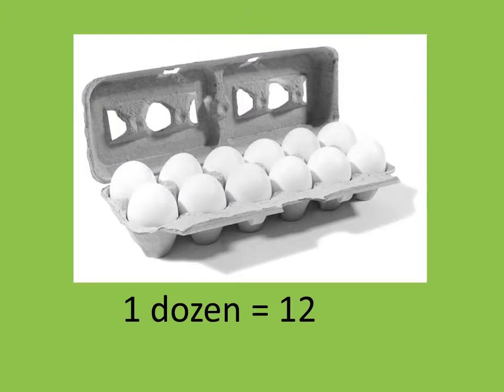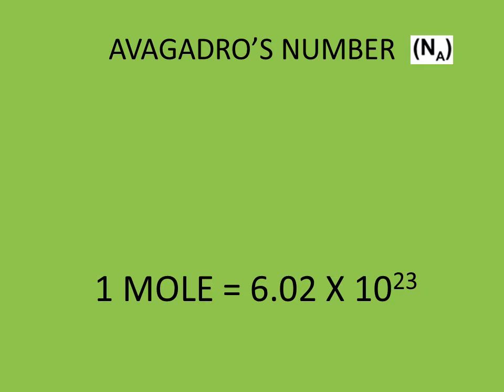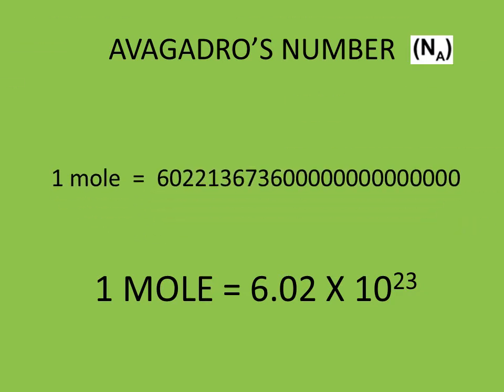You remember last week I introduced the concept of the mole. A mole is just a number, a collective noun if you will. Just like a dozen is also a collective noun, which means there are twelve items. A mole is equal to six by ten to the twenty-three items. As you can see, it is a very large number.